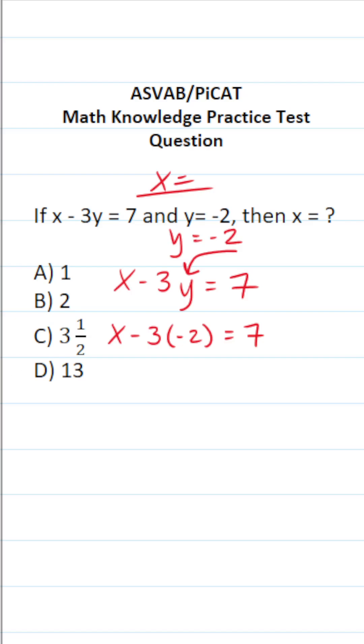Let's go ahead and work this out. This becomes x negative 3 times negative 2. Again, a negative times a negative is going to be a positive. So negative 3 times negative 2 is going to be positive 6 equals 7.